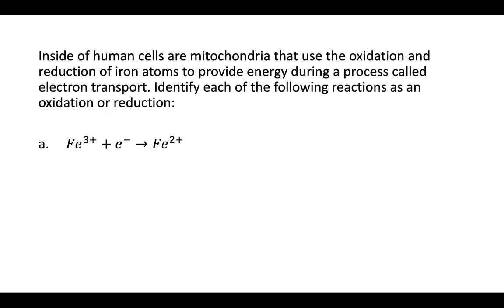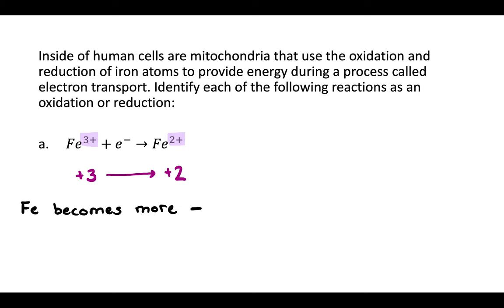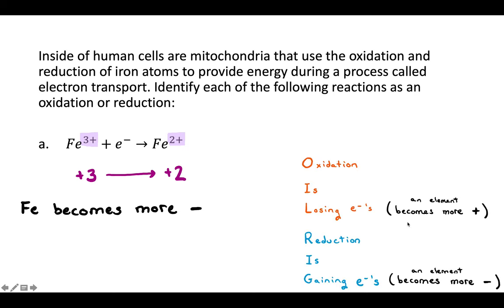Is this oxidation or reduction? Our element is iron. On the left side of the arrow, it has a plus three charge. On the right side, it has a plus two charge. So iron goes from having a plus three to a plus two charge — that means it becomes more negative. If iron becomes more negative, it must have been reduced. So reduction occurred — it gained electrons.